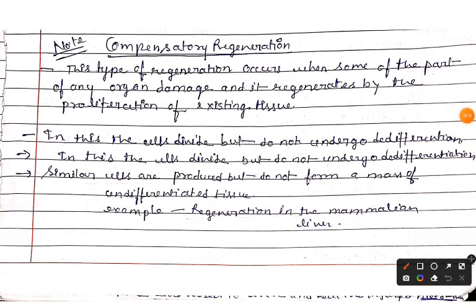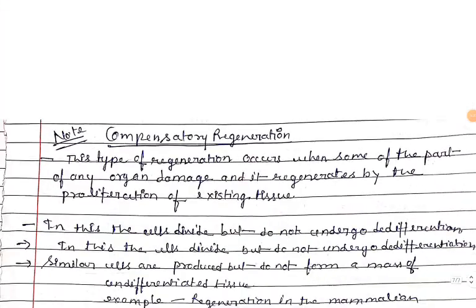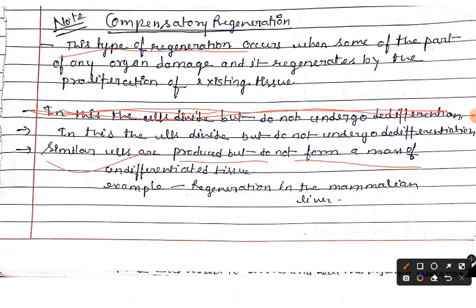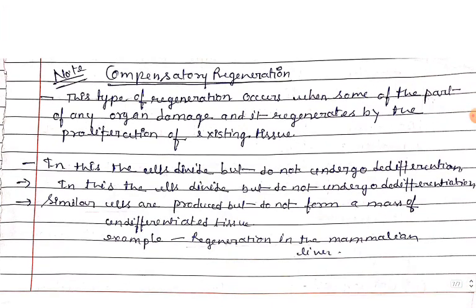Another important term is compensatory regeneration. This type of regeneration occurs when some part of an organ is damaged, and it regenerates by the proliferation of existing tissues. In this process, the cells divide but do not undergo differentiation — similar cells are produced but do not form a mass of undifferentiated tissue. The classic example is regeneration in the mammalian liver.